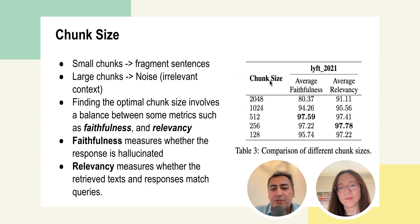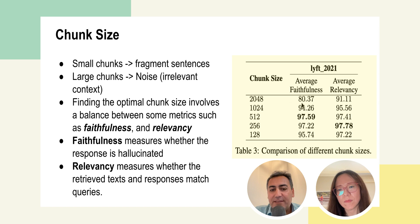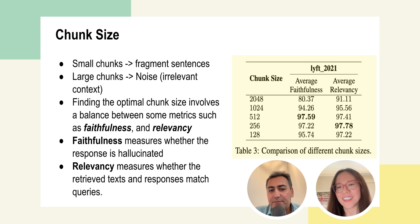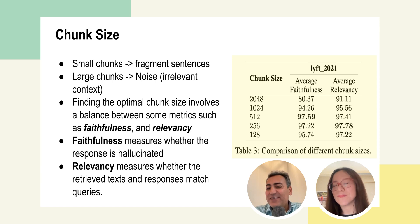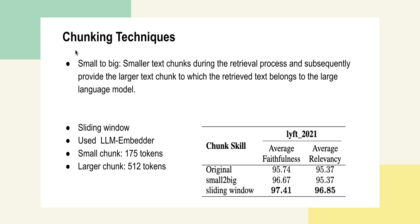They tried different chunk sizes: 2,048, 1,024, and smaller. 512 tokens worked better in terms of faithfulness, and 256 tokens worked better in terms of relevancy. If you look at the bigger chunk sizes, they seem to cause more hallucination because the model finds it hard to understand the long context. When the chunk size is very large, you pass these chunks to the generator, and the hallucination comes from there. So a very large chunk size adds noise and irrelevant context, which confuses the LLM generator.